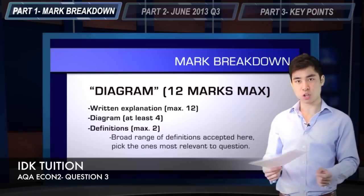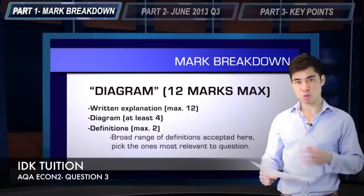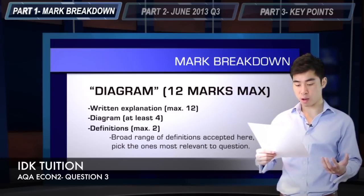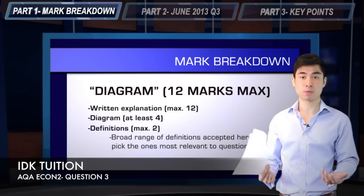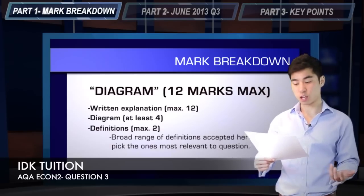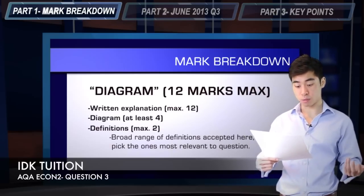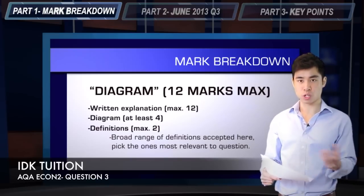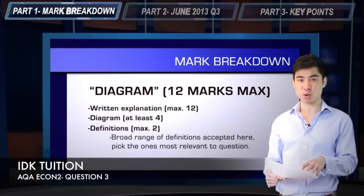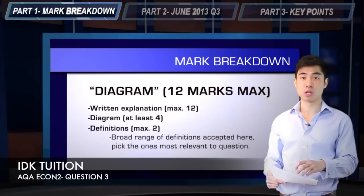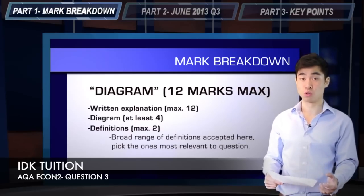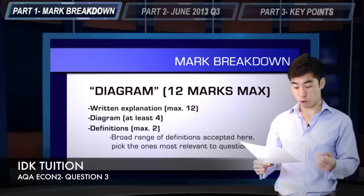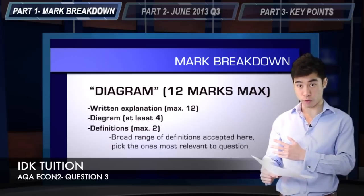A further two marks are available for definitions. Similar to unit 1, you can be quite loose with the terms you define. Types of terms you can define include economic growth, unemployment, inflation, demand side policy, and interest rates — basically any key technical terms you've learnt in unit 2. You should be fine to drop those in, just as long as they're relevant to the question.